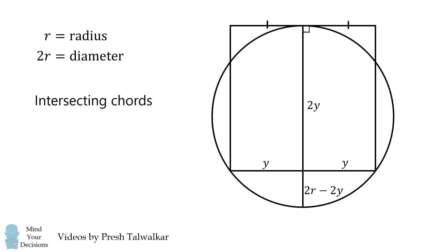Now we can use the intersecting chords theorem. We must have 2y multiplied by 2r minus 2y is equal to y multiplied by y.